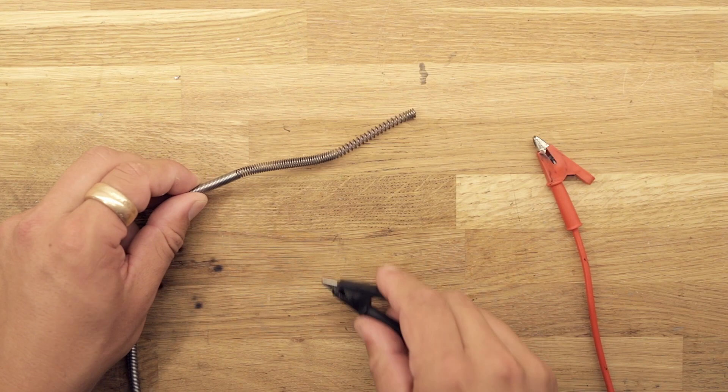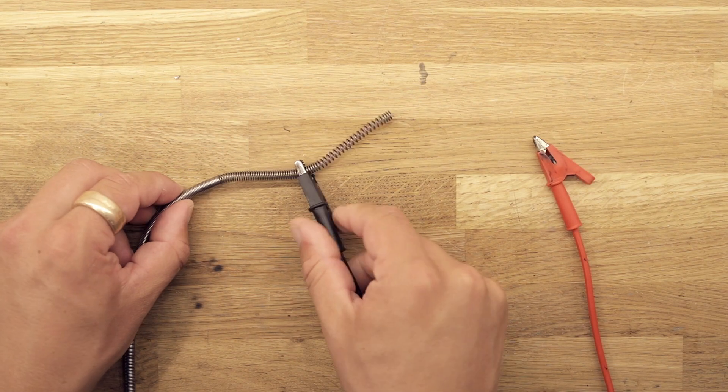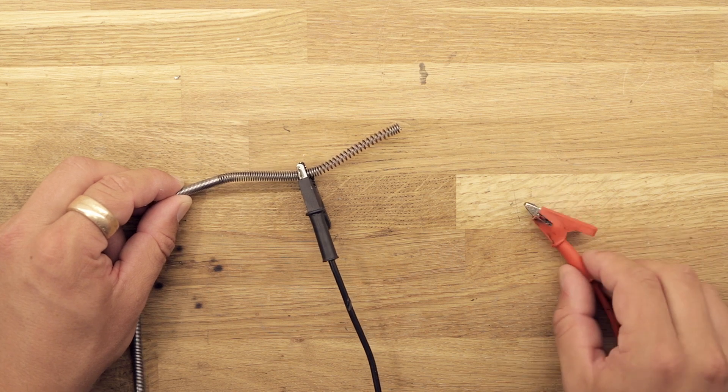Welcome back. We will now look into dimensioning and designing a kanthal heating element like this for the electric kiln.